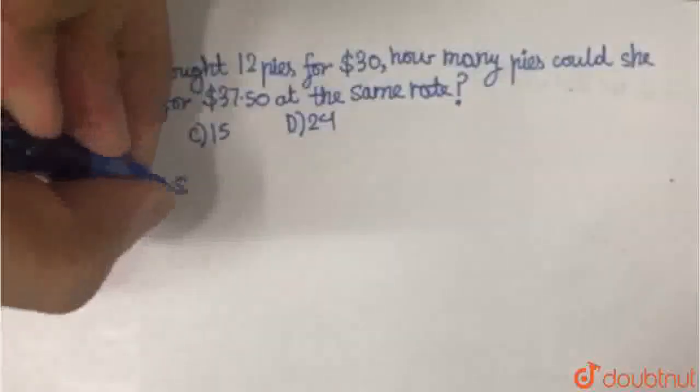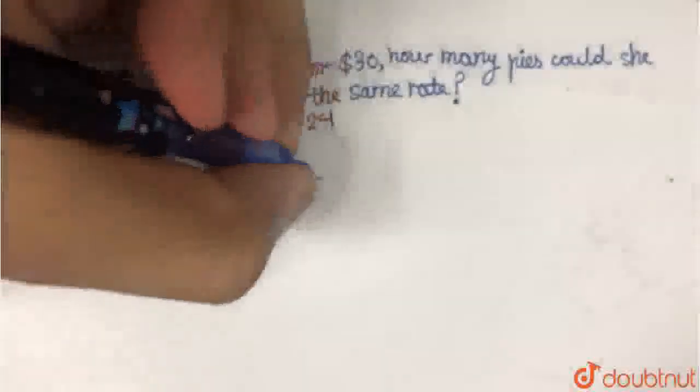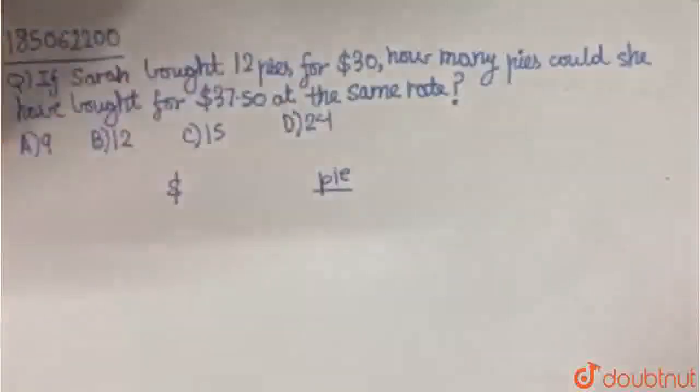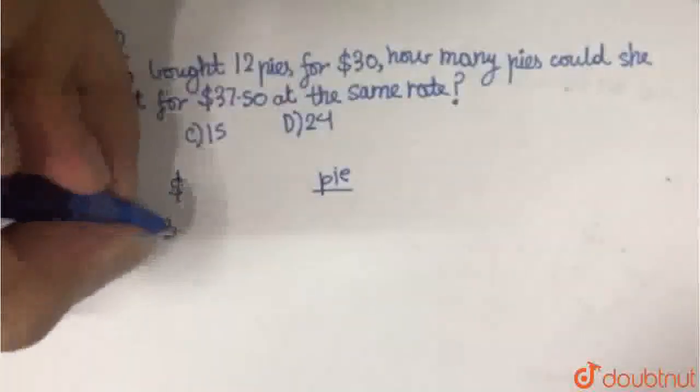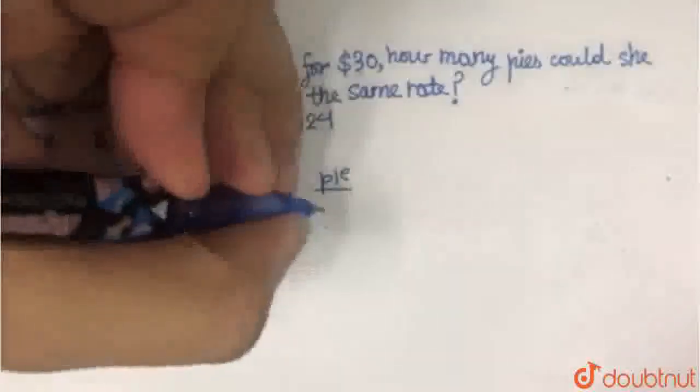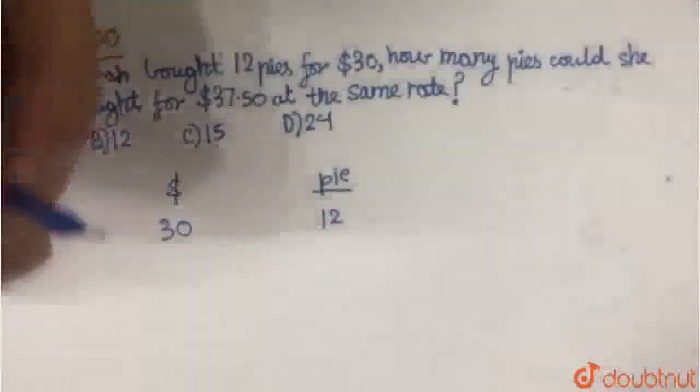So let's see. These are the dollars, and these are the number of pies that Sarah buys. So for $30, she buys 12 pies.